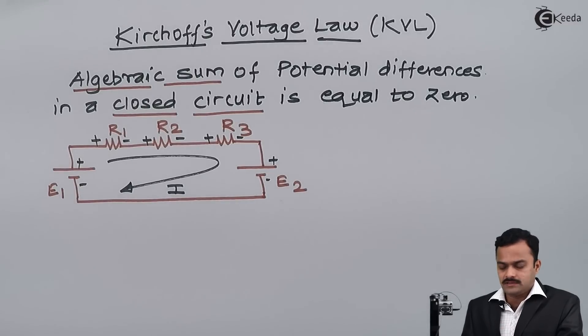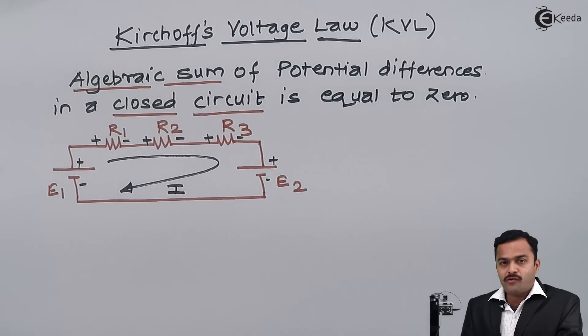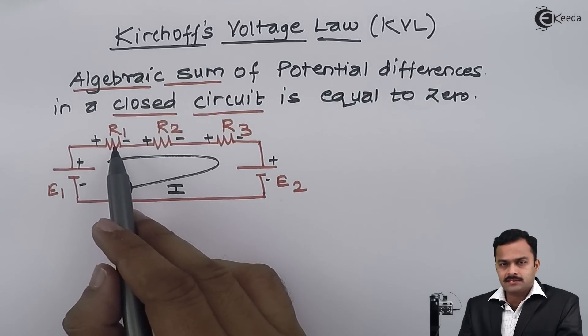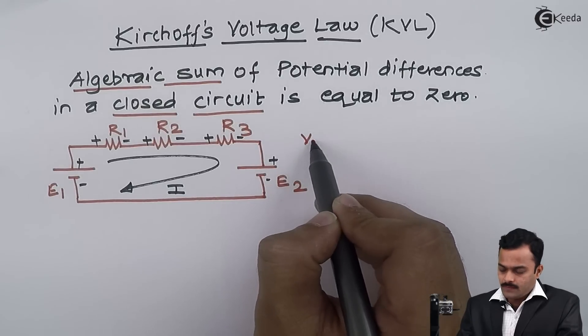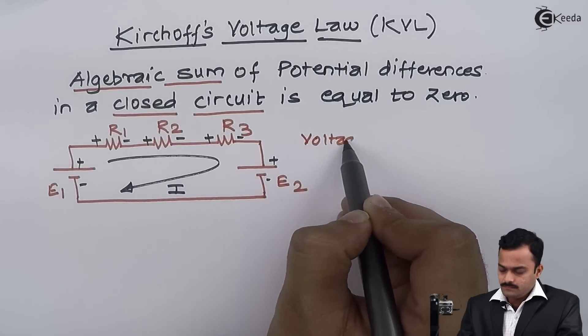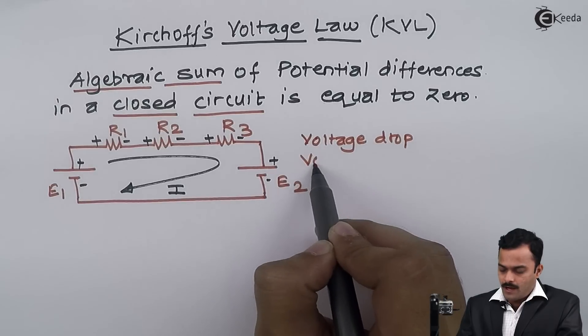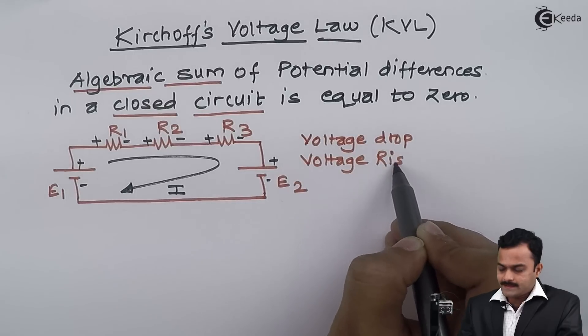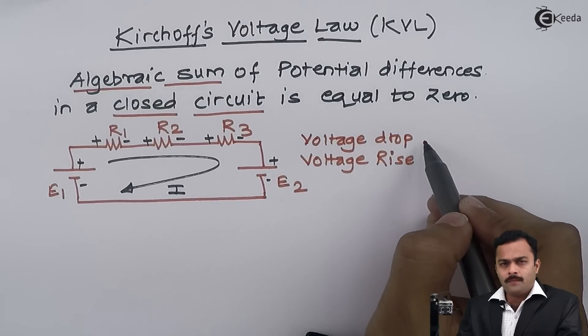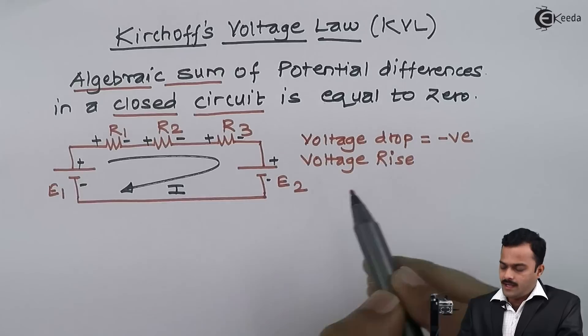We have to elaborate the concept of algebraic sum of potential differences. Here in all I am having one, two, three, four, five elements. Each element is having some voltage drop or it can also be called voltage rise. I will write two concepts: voltage drop and voltage rise. Voltage drop I will consider as negative value and voltage rise I will consider as positive value.